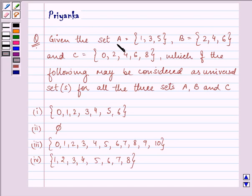It says, given the set A having elements 1, 3, 5, set B having elements 2, 4, 6, and set C which is having elements 0, 2, 4, 6, 8,